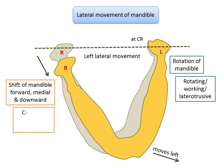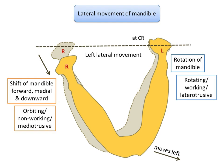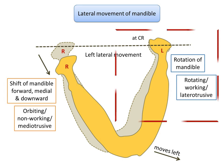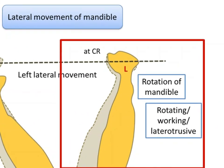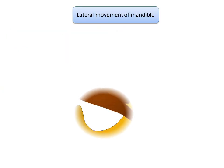The right condyle, which is the non-working condyle, is also known as the orbiting condyle or the mediotusive condyle. It has also been termed the balancing condyle, but that term is quite controversial. Now let's take a closer look at the working condyle.